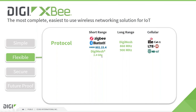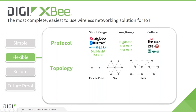Short-range modules operate on 2.4 GHz and support protocols such as 802.15.4 for simple, fast, low-latency point-to-point and point-to-multipoint communication, as well as two mesh technologies: ZigBee and DigiMesh. Both are used to create intelligent, self-routing and self-healing mesh networks. ZigBee is an open interoperable standard; DigiMesh, which is a proprietary protocol developed by Digi, supports completely battery-powered mesh networks.